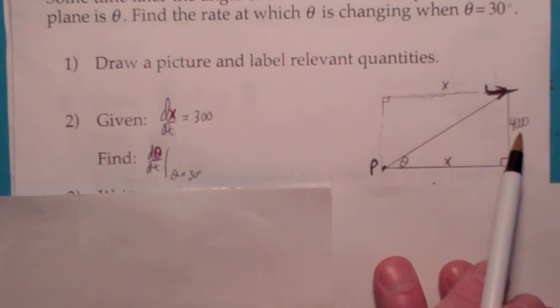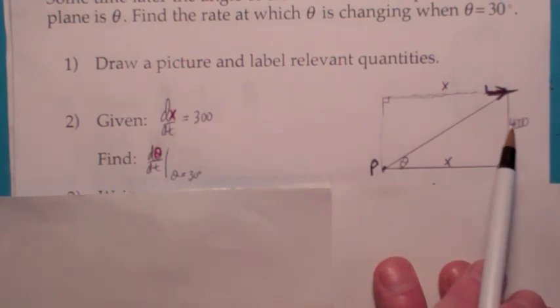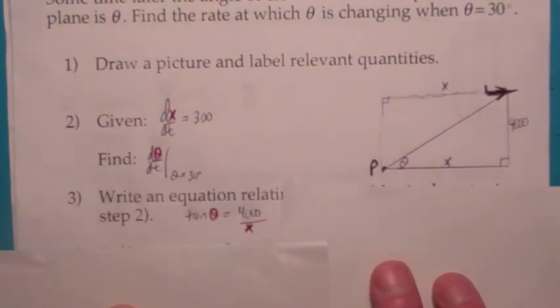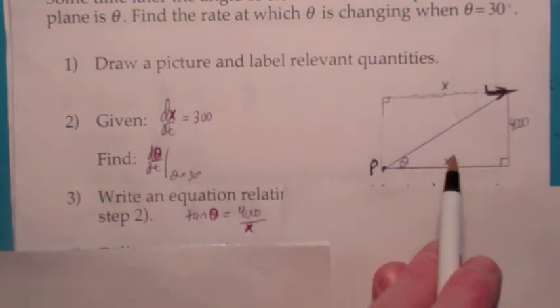So you've got to find a function that relates theta and x. It's kind of nice to use constant values, it makes your computations easier later. So what function relates theta, x, and 4,000? The tangent, of course. Tangent of theta equals 4,000 over x.